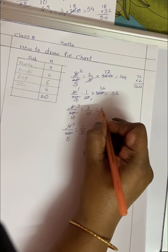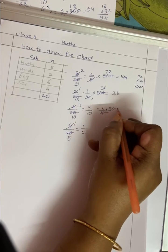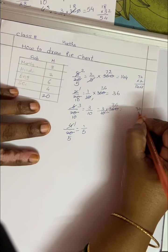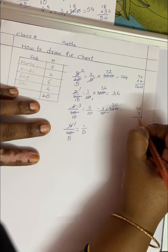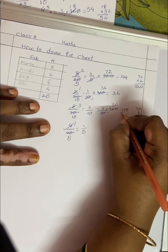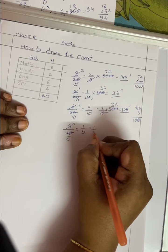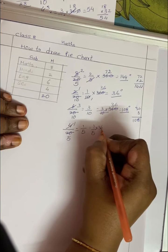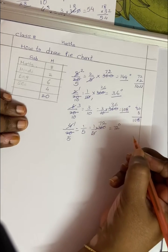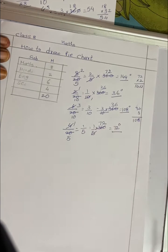Next, 3 by 10 into 360: 3 times 36 gives 108 degrees. And the last one, 1 by 5 into 360: gives 72 degrees. These are the values in degrees — 144, 36, 108, and 72. Now let's draw the pie chart.